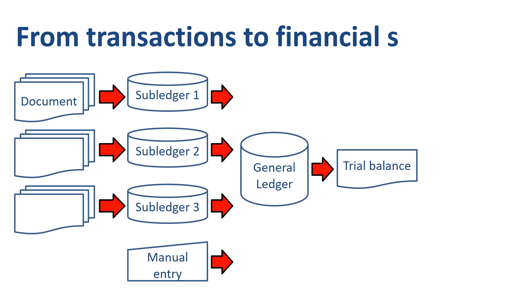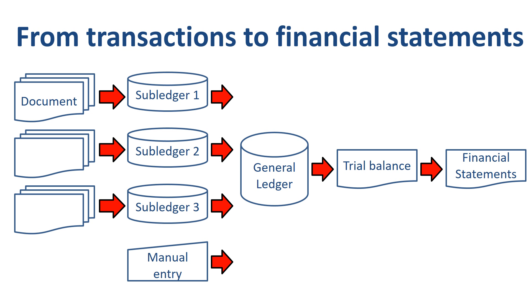Once the trial balance is deemed accurate, the next step in the process can be taken: preparing the financial statements. Using the financial statements, you can connect the financial numbers to the operational reality, by calculating financial ratios and analyzing the trends.